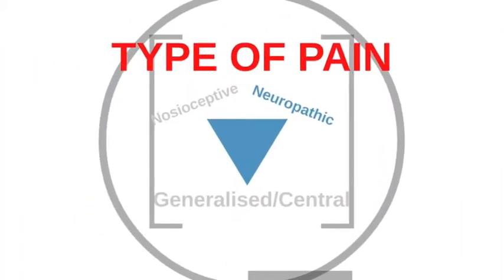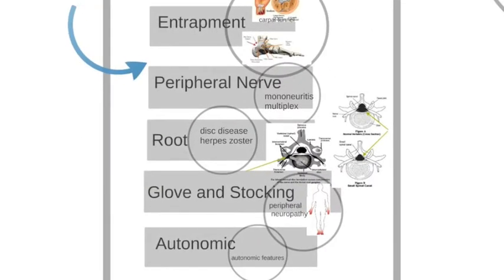There's also neuropathic pain, where the disease is within the nerve — either as an entrapment, inflammation of the nerve, or impairment of the nerve's blood supply, as in mononeuritis multiplex. Root impingement with disc disease or root inflammation with a zoster infection are further examples. Peripheral neuropathy gives a glove and stocking distribution which may be referred to as pain, and there are also autonomic-generated pains.